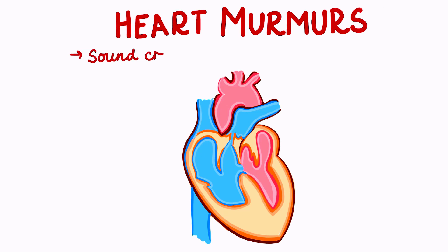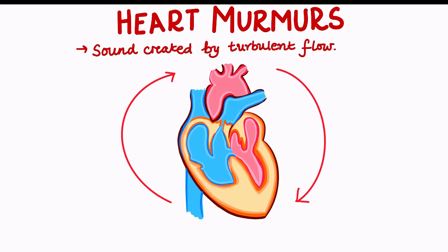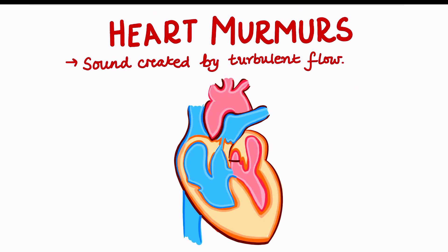So what are murmurs? A heart murmur is a sound created by turbulent blood flow in the heart, and they can be heard using a stethoscope in a cardiovascular exam. The heart beats due to a series of events known as the cardiac cycle. Within this cycle the heart contracts and relaxes. Contraction is known as systole and relaxation is known as diastole.